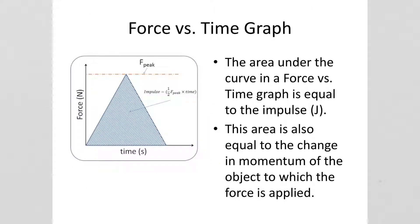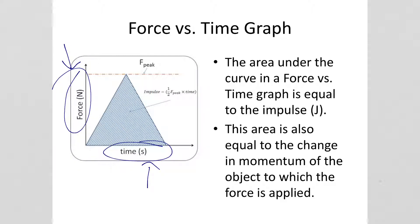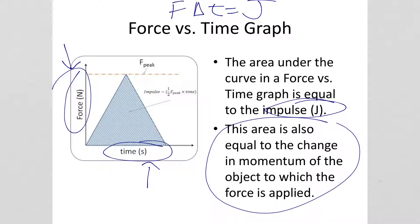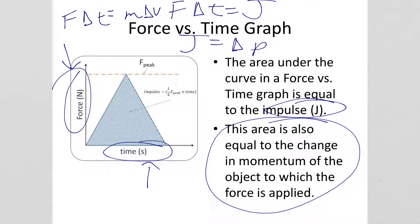We also want to talk about force versus time graphs, with force on the y-axis and time on the x-axis. When we find the area under a curve, we're essentially multiplying y times x. Since force times time equals impulse, on a force versus time graph the area under the curve is equal to the impulse, or J. We might also say that this area equals the change in momentum of the object, because impulse equals change in momentum — that is, F delta T equals M delta V.